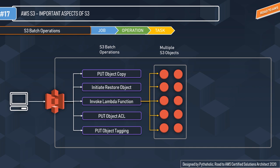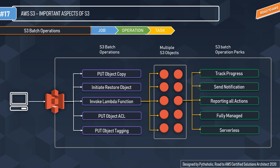For Lambda invocation types: request-response is the default, invoking the function synchronously; event invokes it asynchronously; and dry run validates parameter values and verifies the user or role has permission to invoke the function. As seen in the visualization, these operations can be performed on multiple S3 objects. S3 Batch Operations perks include: tracking the progress of batch operations, sending notifications of completion or pending status, reporting on all actions, and it is fully managed by AWS and serverless.